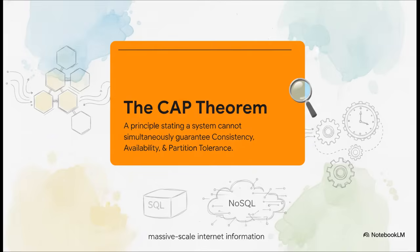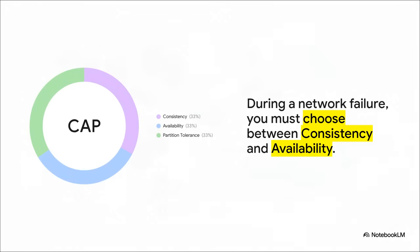It says you can have three really good things, but when the network gets messy, you can only pick two of them at the same time. Partition tolerance means your system doesn't fall over when the network connection between servers breaks—you kind of have to have that. So the real tough choice is between consistency and availability. Do you want to be consistent, which might mean pausing the system to make sure nobody gets old, stale data? Or do you want to be available, meaning you always give an answer, even if that answer is just a little bit out of date?